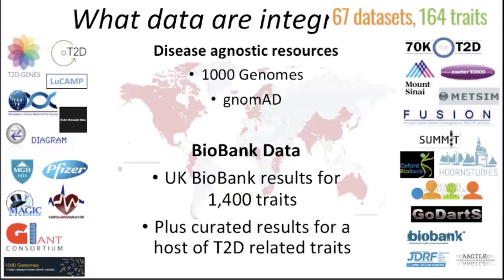Looking forward to biobank data, there are two current expressions of major biobank data in the portal. The first is the UK Biobank, where you can query 1,400 traits through our partners at the University of Michigan who have analyzed these, balancing for case-control biases. There are also curated results for diabetes and a host of other traits currently available. All these data fall into two broad categories: summary-level statistics including direction, effect size, allele frequency, and all the summary stats from the various classes of data — and individual-level data that we analyze de novo through our analysis framework and pipeline.